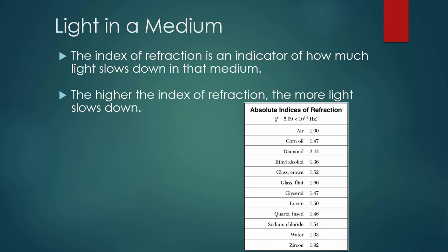Looking at the table again, we can see that light must travel the slowest in diamond because diamond has the highest index of refraction. Light would travel the fastest in air because it has the smallest index of refraction.